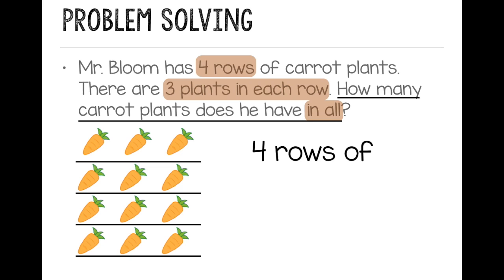I see that I have 4 rows of 3, and when I write a multiplication sentence, the number of rows comes first multiplied by the number in each row. So 4 times 3 gives me a product, or a total, and we can count them all up. You could skip count by 3's of 12. So Mr. Bloom has 12 carrot plants.